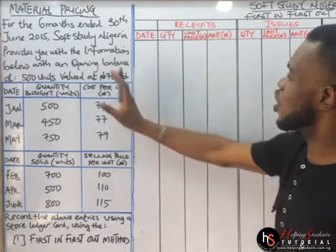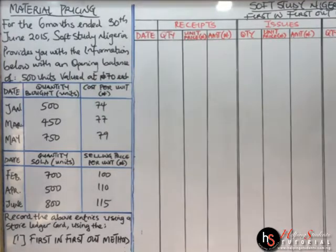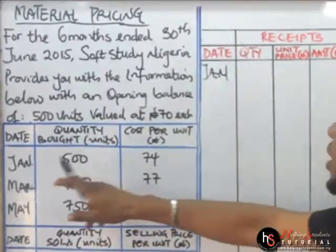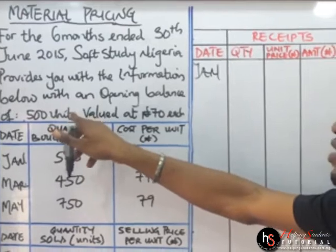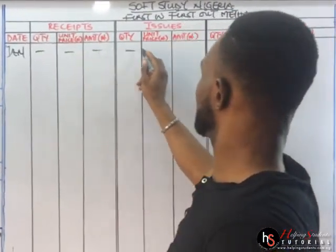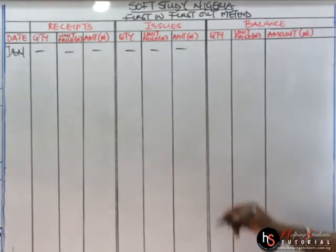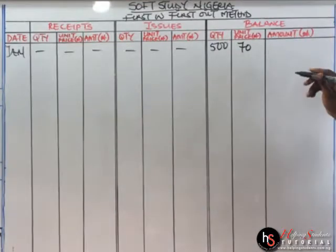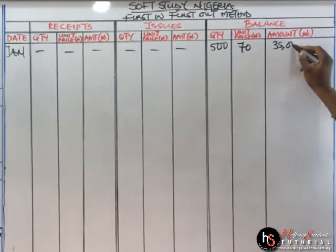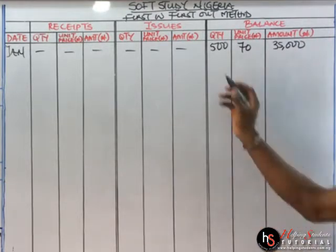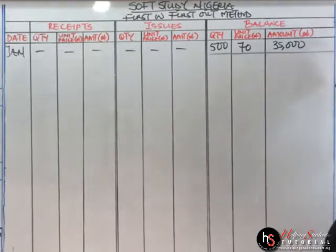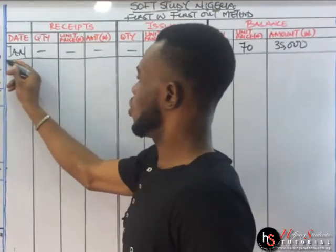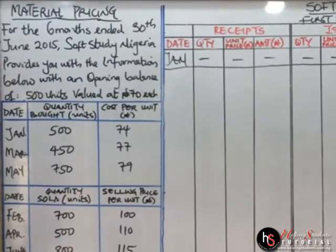So let us proceed. The opening balance always goes directly to the balance entry — take good note of that. For the opening balance, we have January as our first date. So it goes directly to the balance column. We have 500 units at 70 naira, so 500 times 70 gives us 35,000. We've recorded the first transaction. Rule it off — we are done with this.